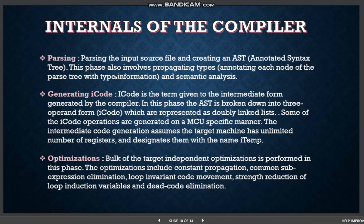i-code is the term given to the intermediate form generated by the compiler. In this phase, the AST is broken down into three-operand forms which are represented as doubly linked lists. Some of the i-code operations are generated in an MCU-specific manner. The intermediate code generation assumes the target machine has an unlimited number of registers and designates them with the name 'iTemp'.